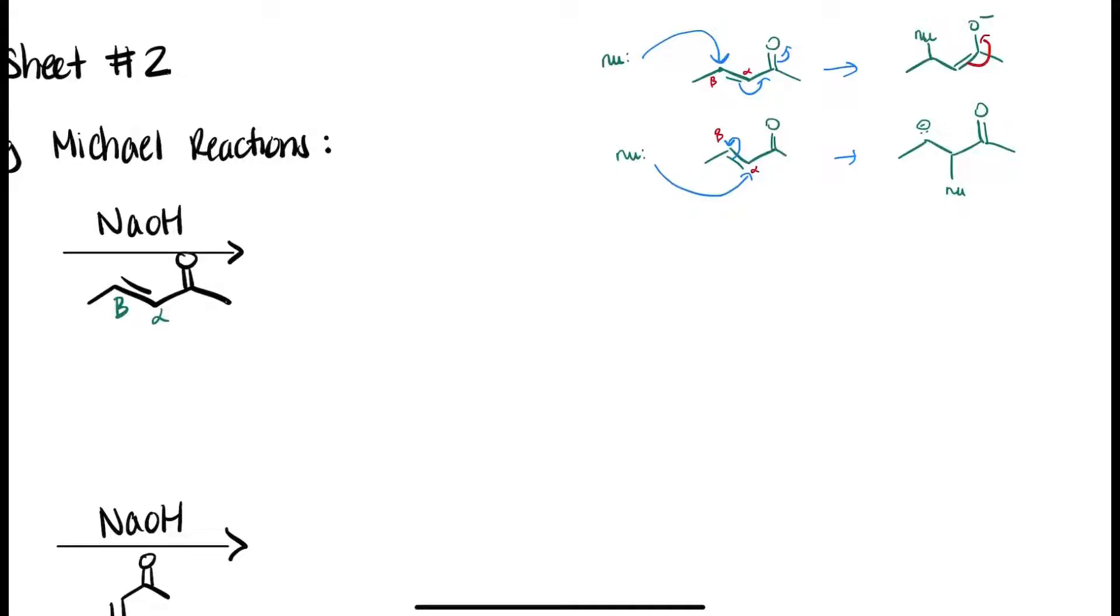So it is stabilized by resonance. But in the other case, if the nucleophile attacks at the alpha position, we will result in a negative charge on the carbon, which is very unfavorable. We don't want a charge on carbon, right? So the beta position is more electrophilic.